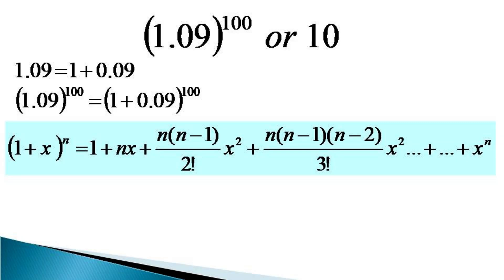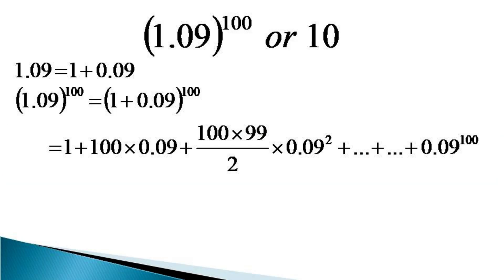With the binomial theorem, we get (1.09)^100 as being equal to 1 + 100 × 0.09 + (100 × 99)/2 × 0.09² and so on, with the last term as 0.09 raised to the power 100.